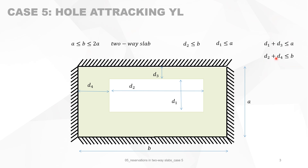The same condition applies in the other direction: D2 plus D4 must be smaller than the width. It is a type of hole that attracts the yield lines. Be careful, because when D3 is small, this becomes a little unlikely to happen. So this formulation is for the general case.